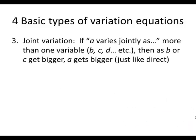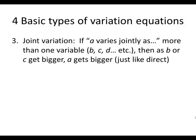The next type is called joint variation, which says if a varies jointly as, well, in this case, there'd be more than one variable, b, c, d, e, f, and so on. Then as b or c gets bigger, a also gets bigger. And notice that this is kind of like direct, except there's more than one number being multiplied by k.